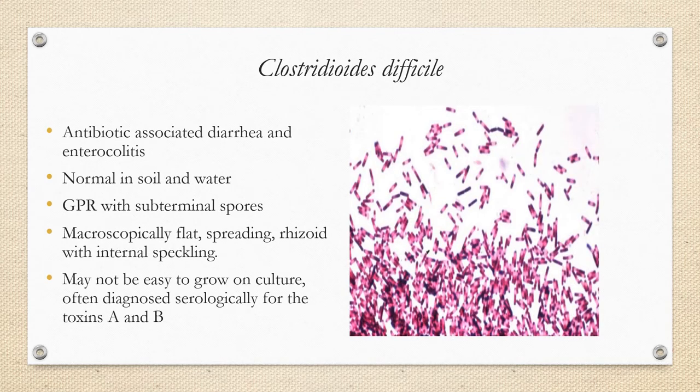Clostridioides difficile is associated with diarrhea and enterocolitis. It can be normal in the environment in soil and water, but abnormal in the gut. It's a gram-positive rod that produces subterminal spores, and macroscopically appears flat and spreading rhizoid with internal speckling. It may be grown on CCFA agar (cycloserine cefoxitin fructose agar). The best way to identify C. diff is serologically by looking for toxins A and B — toxin A causes acute fluid accumulation and toxin B causes destruction of the mucosa.